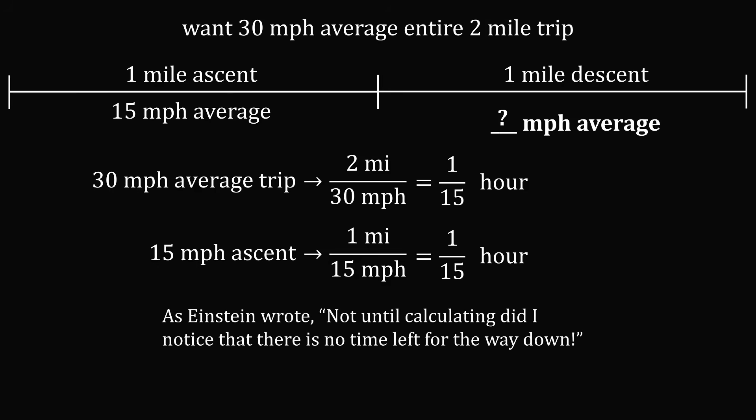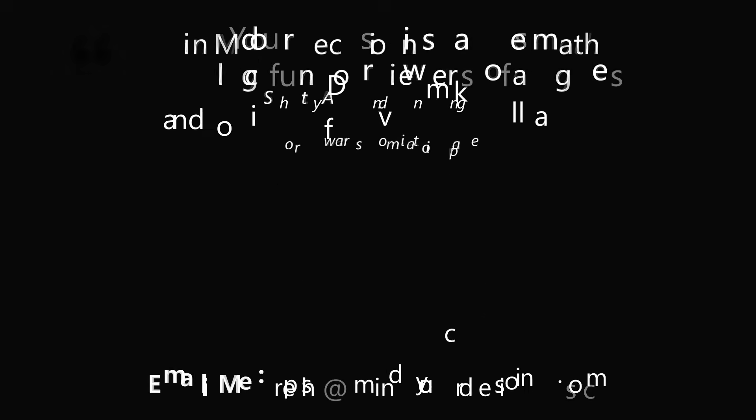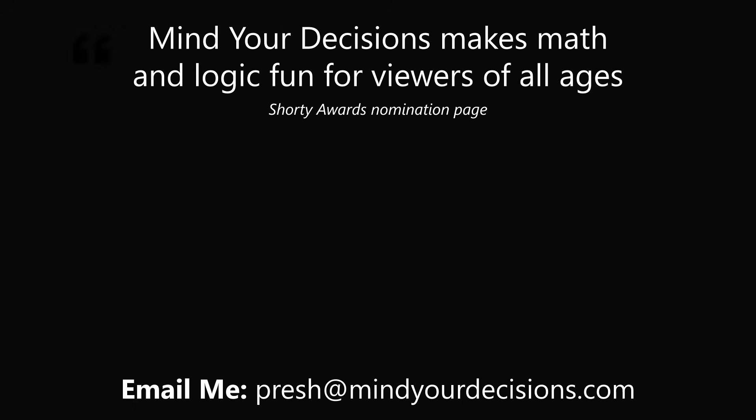Albert Einstein himself wrote, 'Not until calculating did I notice that there is no time left for the way down.' So the concept of averaging speeds was paradoxical even to the great Albert Einstein. So even if us regular folks are confused from time to time, that is perfectly okay. Averaging speeds is a confusing and interesting concept. Thanks for making us one of the best communities on YouTube. See you next episode of Mind Your Decisions where we solve the world's problems, one video at a time.